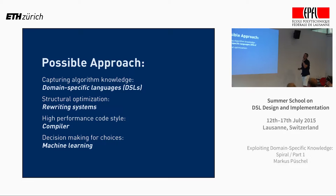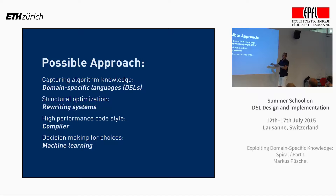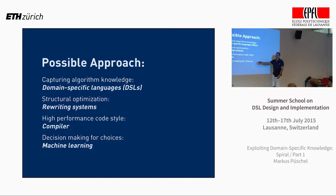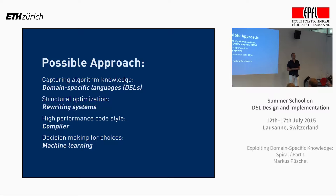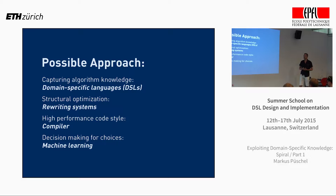It's a structural optimization. Once you have the proper DSL, you can use a rewriting system to symbolically manipulate. You need the high-performance code style — this ugly-looking SSA-style code. But if you have a generator, you can decide yourself what kind of code to output. And then you always have choices — that's a big problem. You never know which among hundreds and thousands of reasonable choices is the best. Many people use search, called auto-tuning: you have a thousand choices, produce them all, measure the runtime, pick the fastest. I prefer machine learning for this problem, but search is also reasonable.